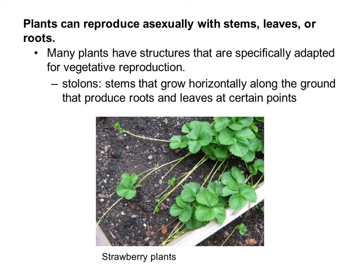Some plants have structures specifically adapted for vegetative reproduction — that is, asexual reproduction. For example, stolons are stems that grow horizontally along the ground and produce roots and leaves at certain points, like this strawberry plant. The stolon extends outward and puts down a new plant because it has its own root system and leaves.